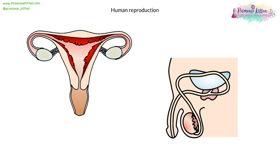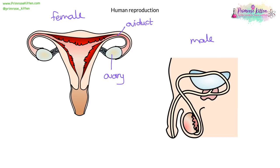In human reproduction, you've got two different organisms — the female organism and the male organism. Here you've got the ovary. This is the oviduct, which is where the egg gets fertilized. This is the uterus, which has a uterine lining. You've got the cervix, which is the mouth of the uterus, and then you've got the vagina.